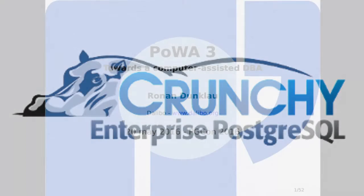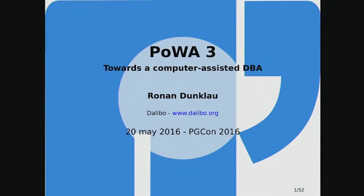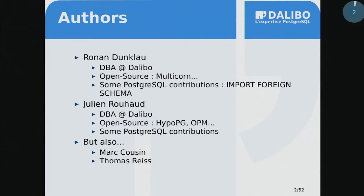I'm Ronan D'Inclos and I'm here to talk to you about POWA version 3 and how we are trying to bring tools to help the DBA make informed decisions about how to optimize a database. I'm a DBA at Dalibo, a small-time contributor to PostgreSQL, and I've worked on another open source project called Multicon. This project was also written by my colleagues at Dalibo: Julien Rouault, Marc Cousin, and Thomas Rice.